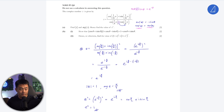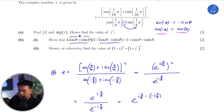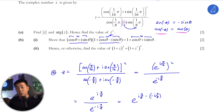Now let's look at part b(i): show that (cos θ + i sin θ)(1 + cos θ − i sin θ) equals the right-hand side. The key is to understand that cosine θ + i sin θ is W, and cosine θ − i sin θ is its conjugate W*. So we start with the left-hand side and show it equals the right-hand side.